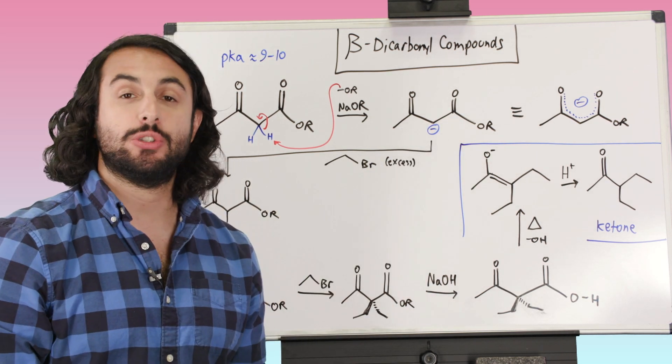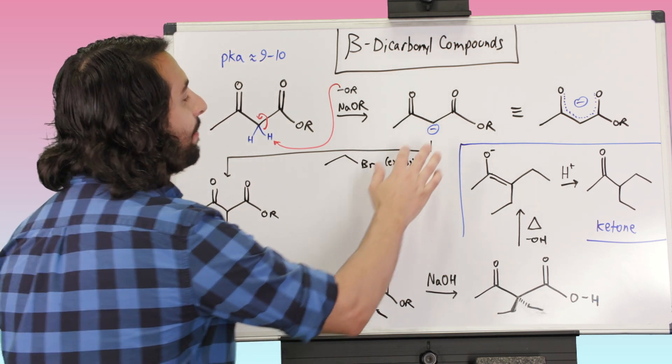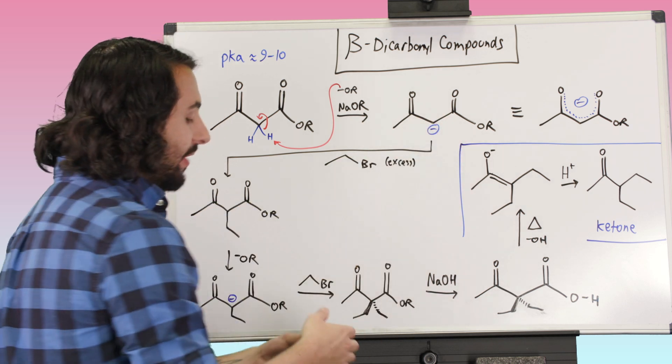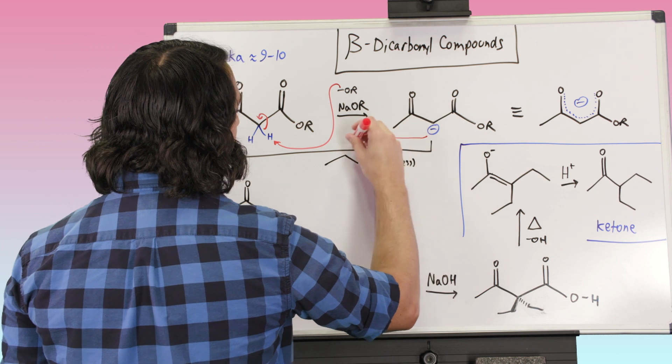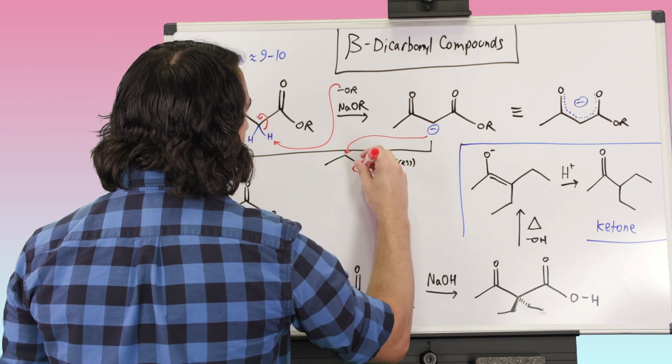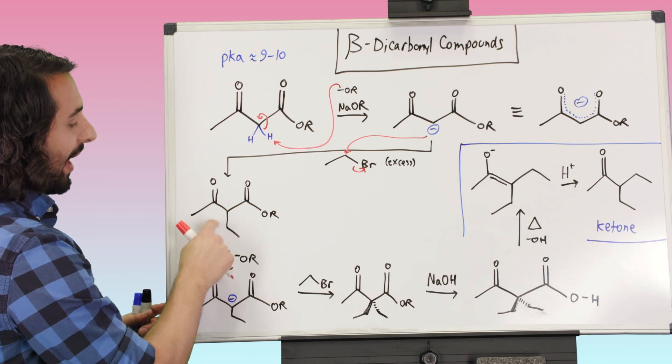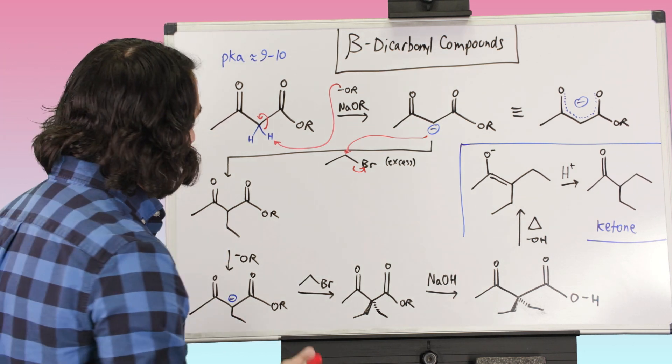And now one thing that we can do from here is we can alkylate at this position. So we can do simple SN2 where we are just having this act as a carbon nucleophile on some alkyl halide. So why don't we have this attack ethyl bromide. So let's attack that right there, kick off that bromine. So we have attached an ethyl group at this position right here. That was just a regular SN2 reaction.